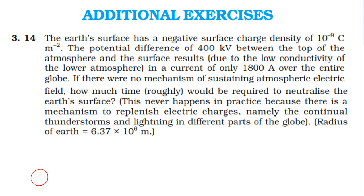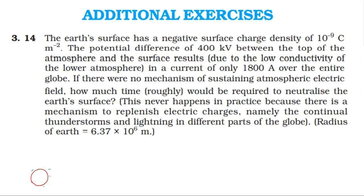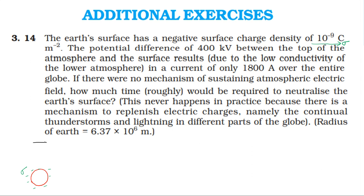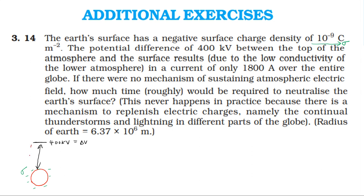The earth has a negative surface charge density sigma equal to 10 to the power minus 9 coulomb per meter square. The potential difference between the surface and the top of the atmosphere is 400 kV. The current I is equal to 1800 ampere.